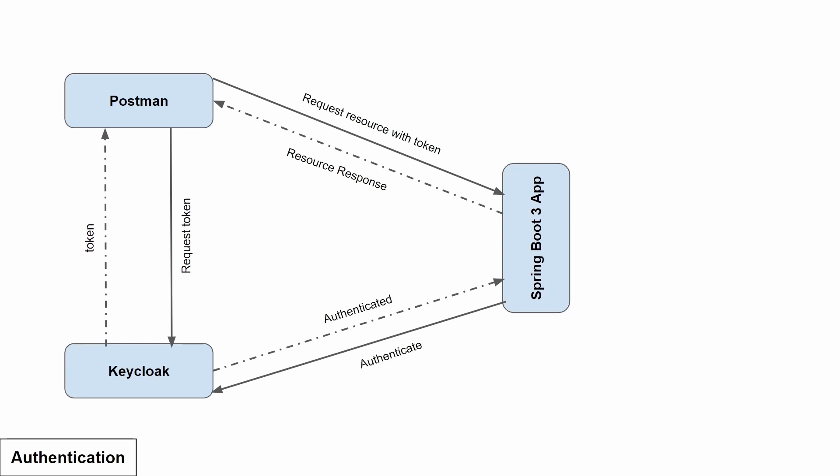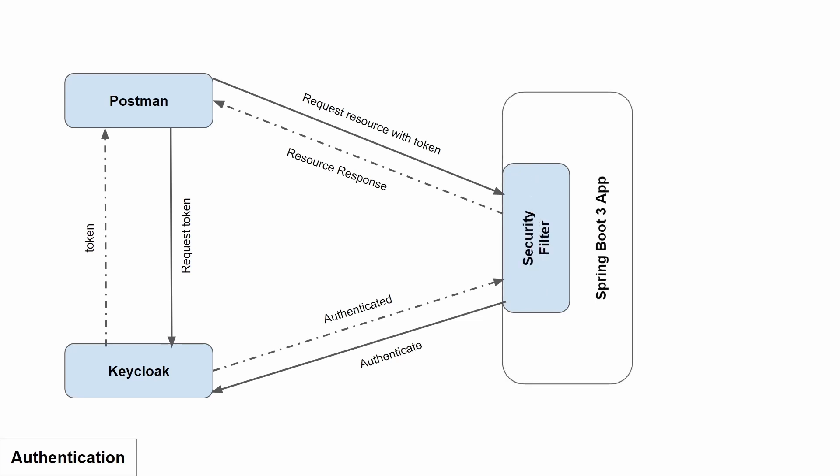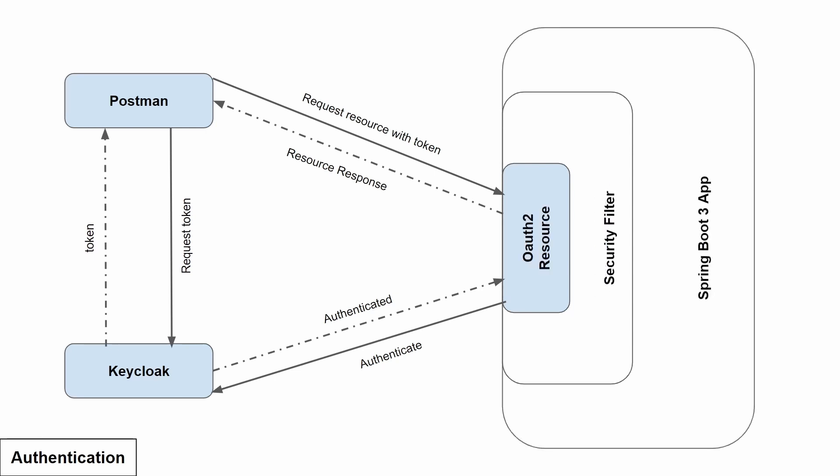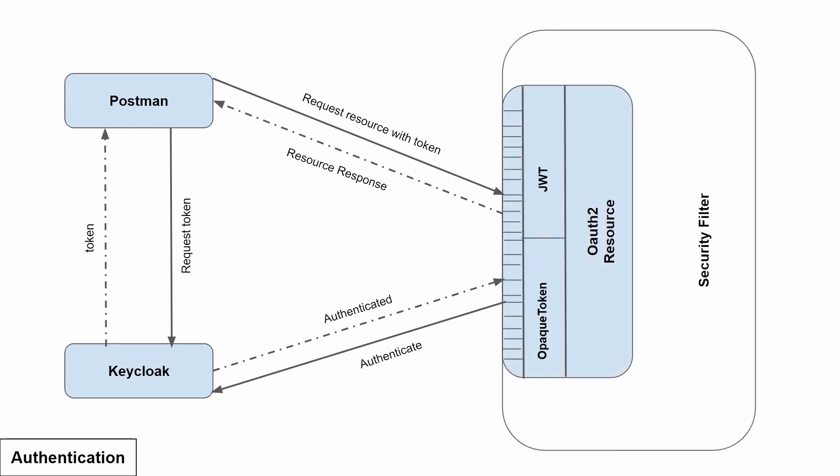We are going to see the authentication process first, and later we'll see the authorization process as well. Spring Security is used for the authentication process, and within Spring Security it uses a Security Filter Chain. If we zoom in further, the Security Filter Chain in turn uses the OAuth2 Resource Library for the authentication process.